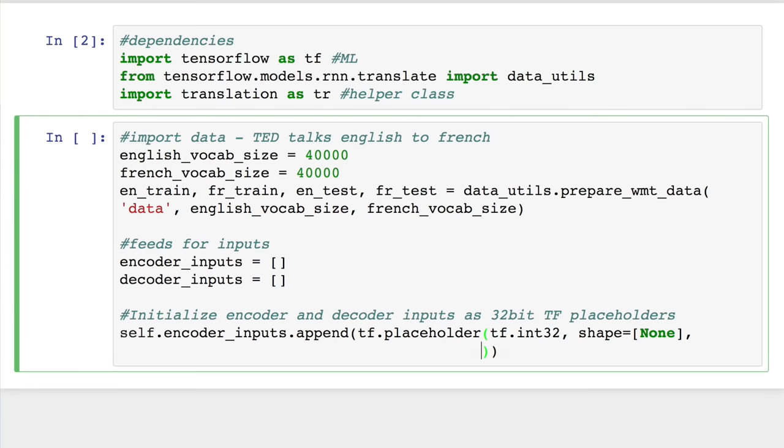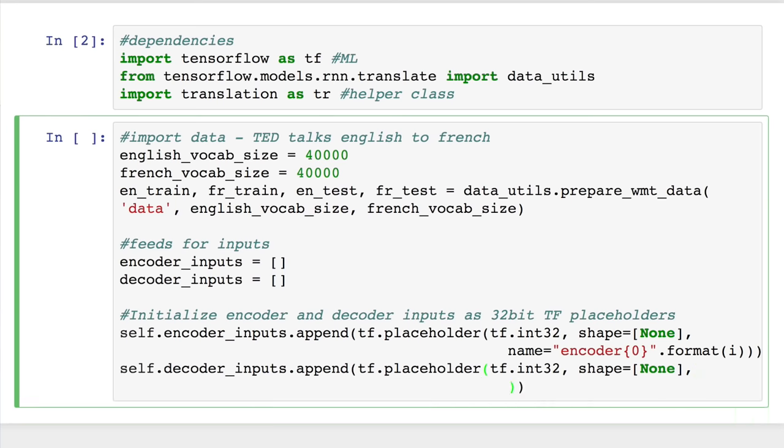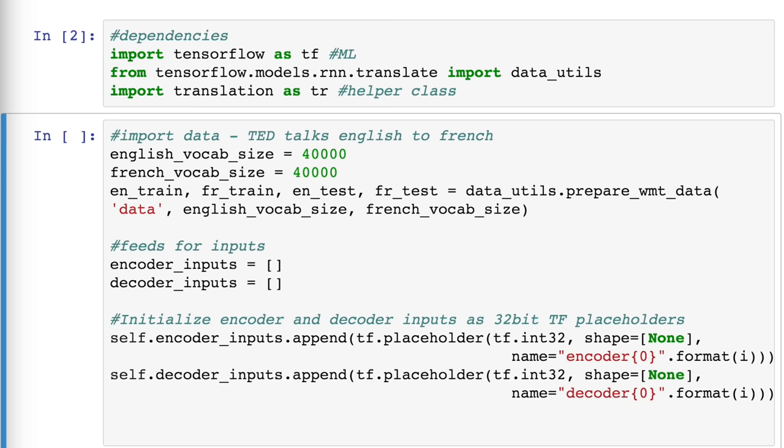We'll then initialize TensorFlow placeholders for our encoder and decoder inputs. Both will be integer tensors that represent discrete values. They will be embedded into a dense representation later. We'll feed our vocabulary words to the encoder and the encoded representation that's learned to the decoder. Now we can build our model.